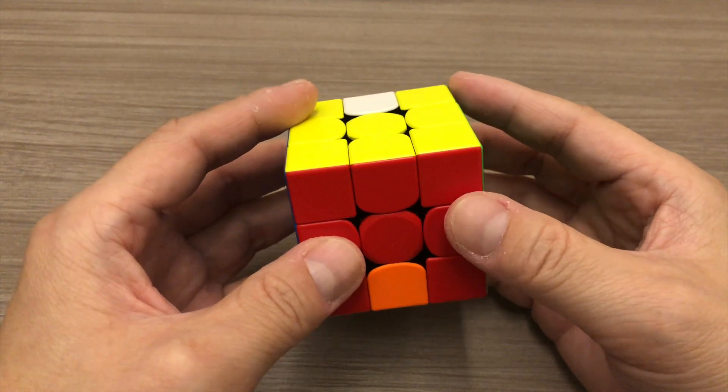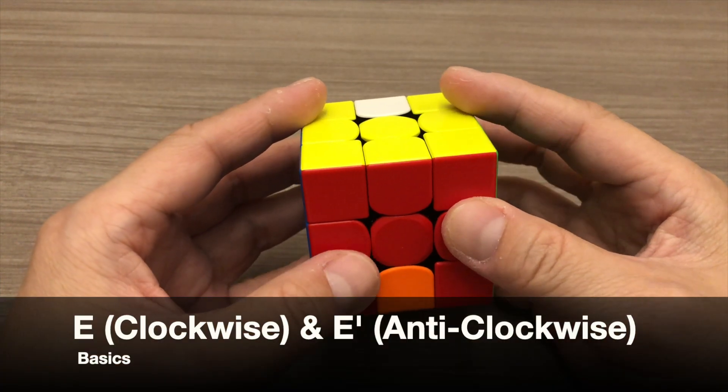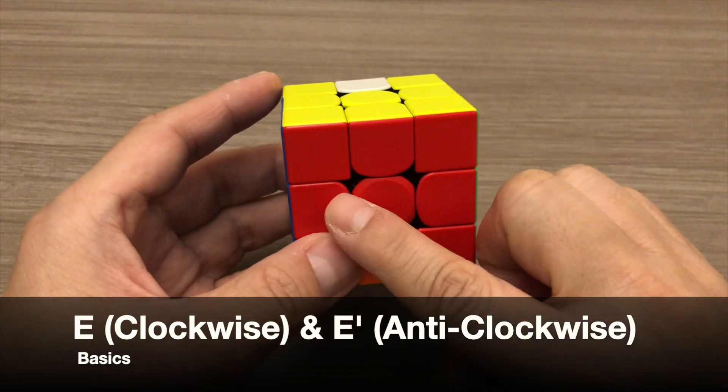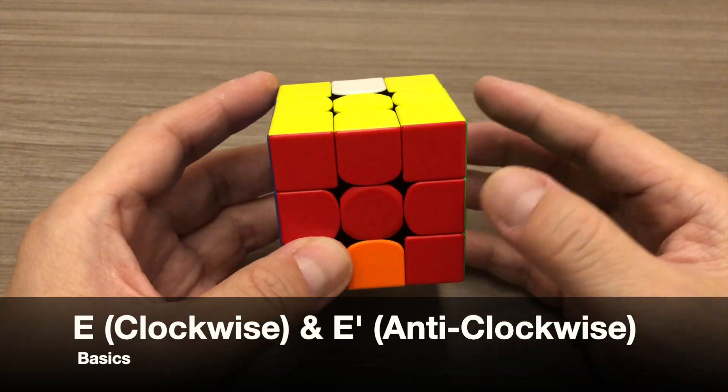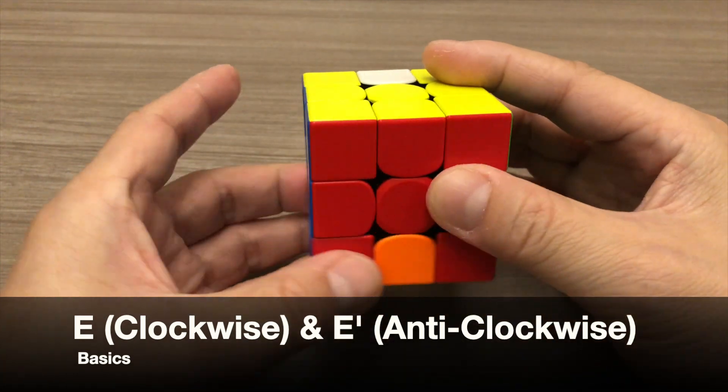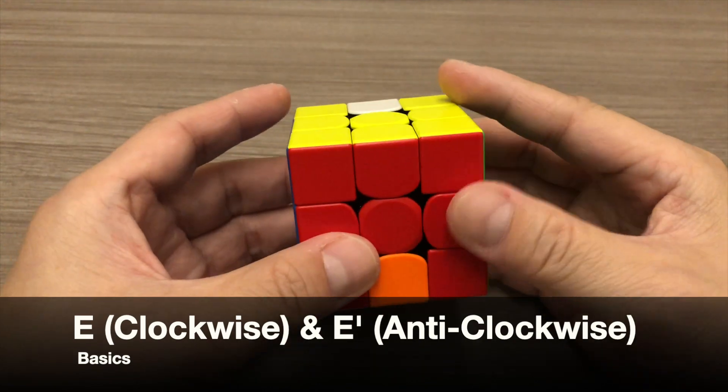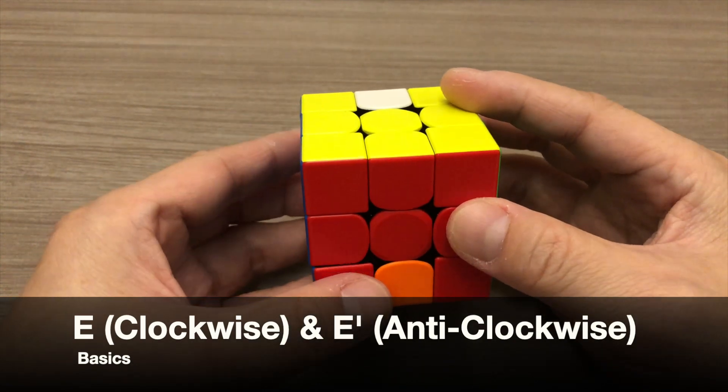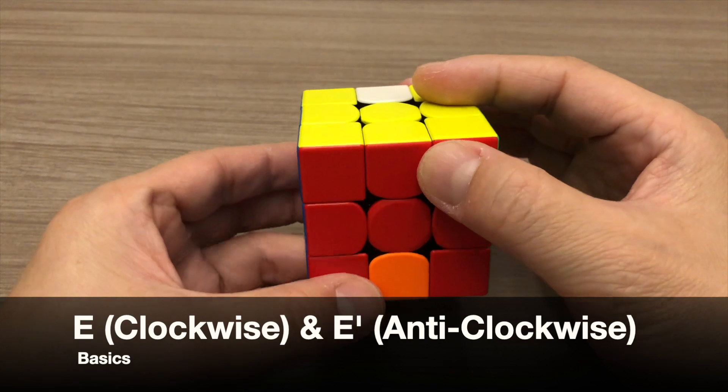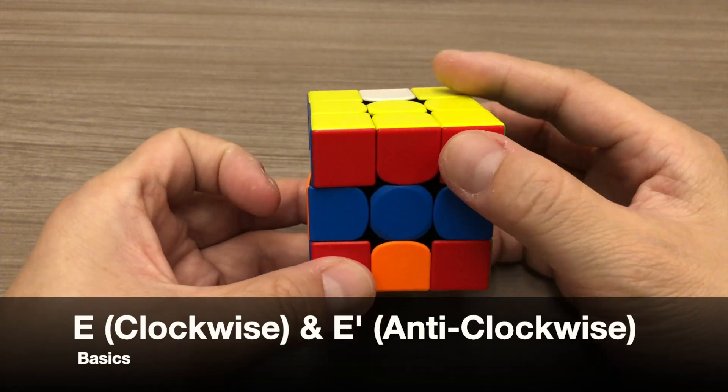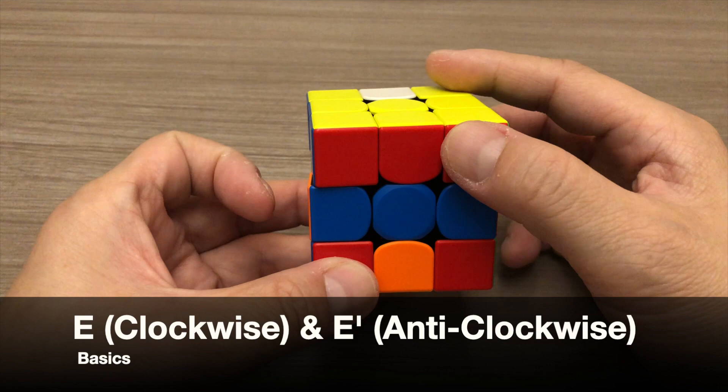The first move notation is E, which is the middle horizontal slice layer here. And it follows the direction of the down face. So for E, you'll rotate the middle horizontal slice layer clockwise. And for E' you'll rotate it anticlockwise.